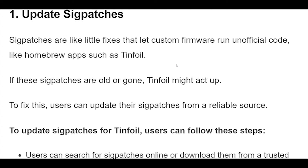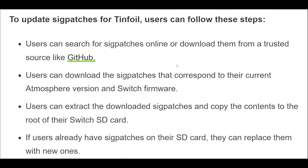To fix this, users can update their SIG patches from a reliable source. Users can search for SIG patches online or download them from a trusted source like GitHub. Download the SIG patches that correspond to your current Atmosphere version and Switch firmware. Extract the downloaded SIG patches and copy the contents to the root of your Switch SD card. If you already have SIG patches on your SD card, replace them with the new ones.